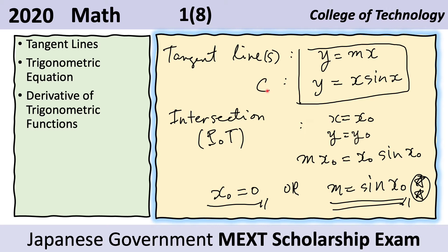We now know that the points of intersection between the curve and the tangent lines must be given by equating y in the line equation to the y in the curve equation, because at the points of intersection the y's must be equal and the x's must be equal. If we call the points of intersection x sub o and y sub o, then mx sub o equals y sub o equals x sub o times sine of x sub o. Solving this equation, our tangent lines must have the following slope: m equals sine of x sub o.